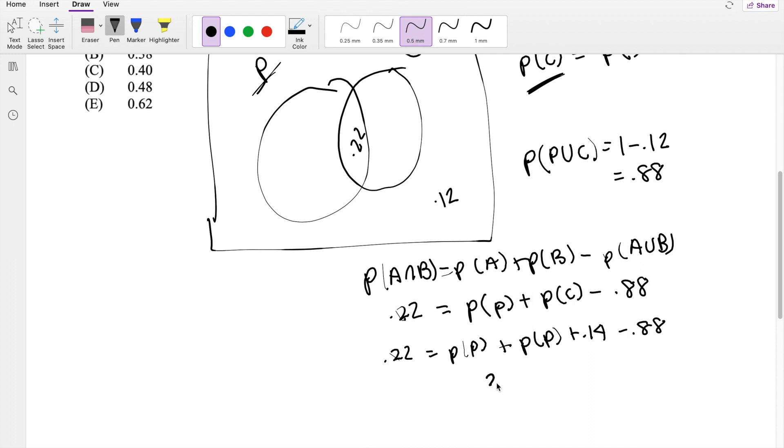So this will give you 2 times the probability of P is equal to 0.22 minus 0.14 plus 0.88. So then 2 times the probability of P is equal to 0.96.